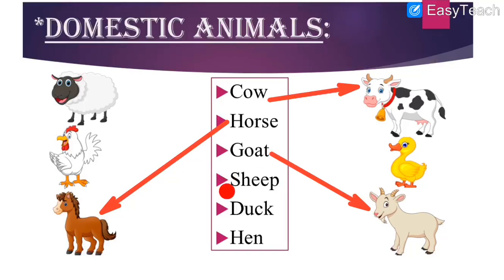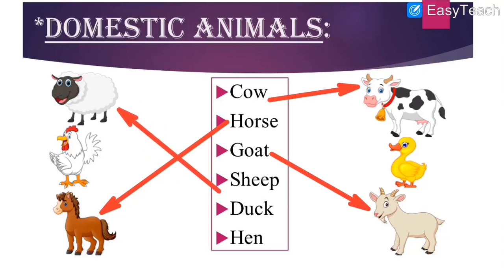Next spelling: S-H-E-E-P, sheep. Which side can you see sheep? We can see sheep on the left hand side. Let us match the spelling with the picture of sheep.